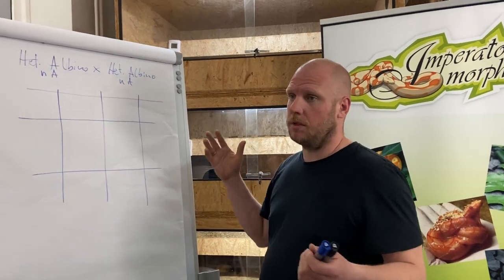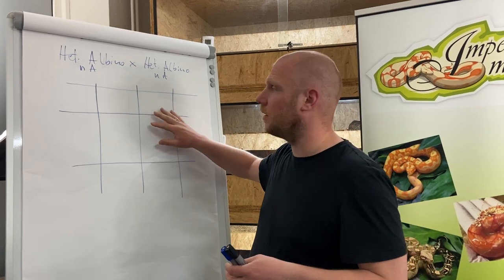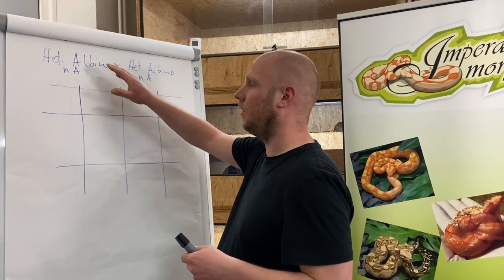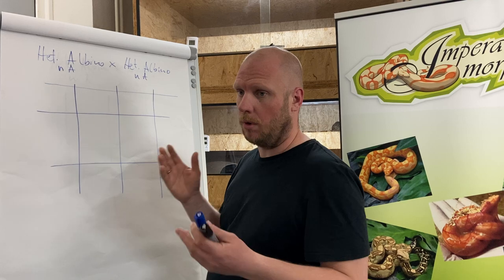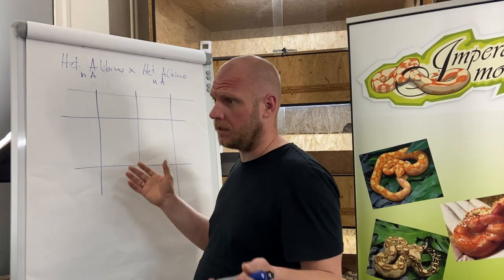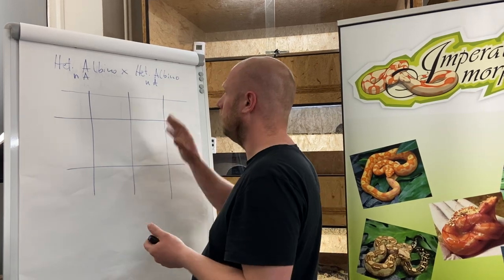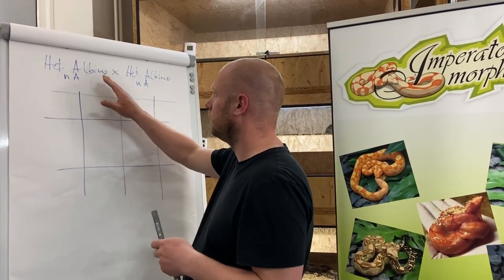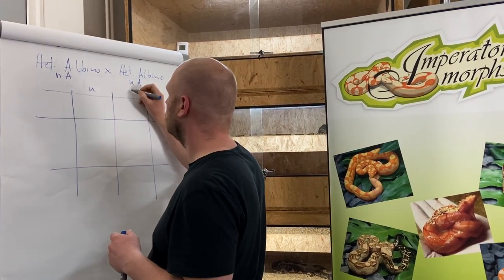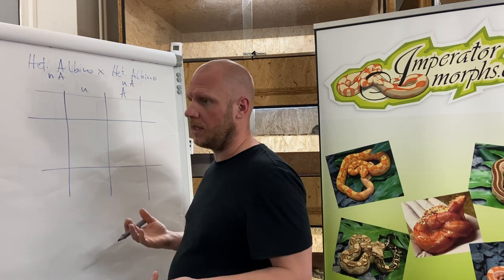All we need is a Punnett square. I've just prepared one and I'd like to show you the example of a het albino bred to a het albino — what happens in that case. You can replace the albino with any other recessive morph like leopard or anery. Het albino to het albino means the albino is only present as a recessive trait and neither parent is a visual animal.